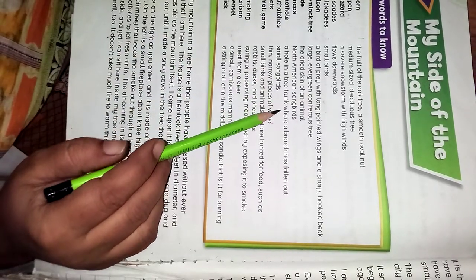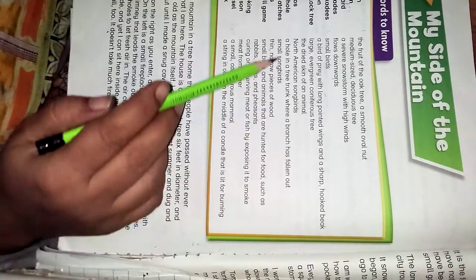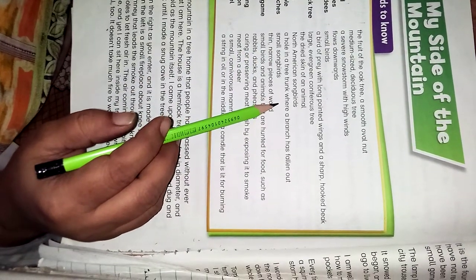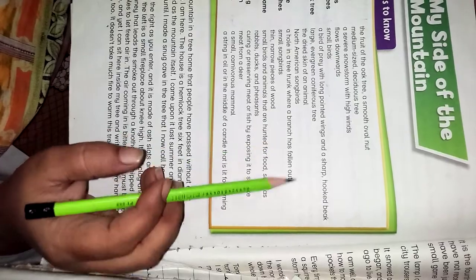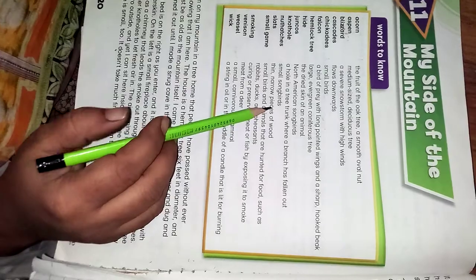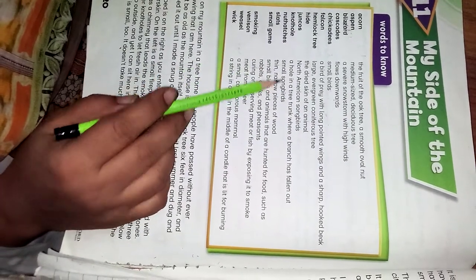Knotholes: a hole in a tree trunk where a branch has fallen out. Yani, aik darakht ki tane mein suragh jahan se shaakh gir gayi hoti hai. Nuthatches: small songbirds. Yeh bhi chhote gaane wale parinde hain.